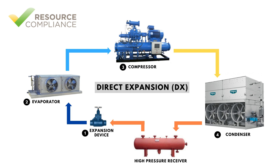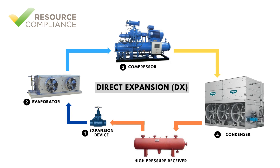From the compressor, the high-pressure, high-temperature vapor is piped to a condenser, which is a heat exchanger whose purpose is to reject the heat gained in the evaporator and compressor to a place where the heat can do no harm.